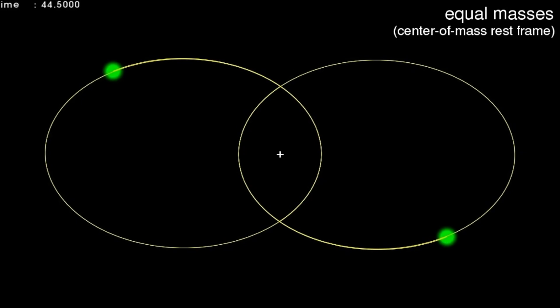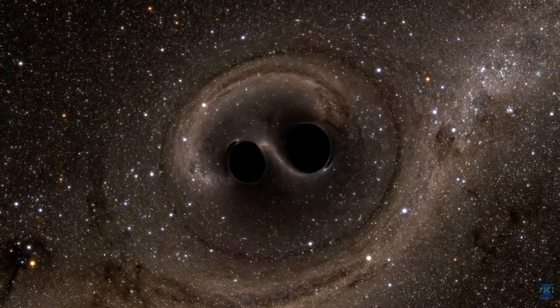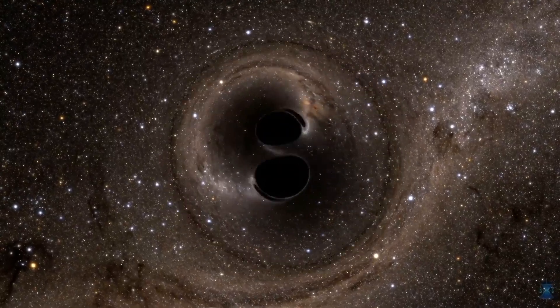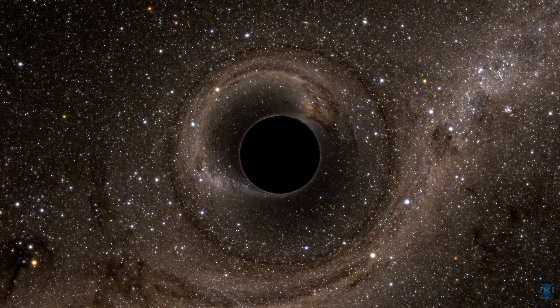And then this method allowed, contrary to what most people thought could be possible, to compute the motion of black holes up to the moment where they coalesce, where the two black holes touch each other and become only one black hole.